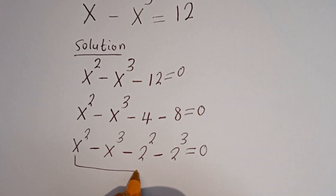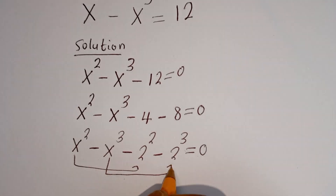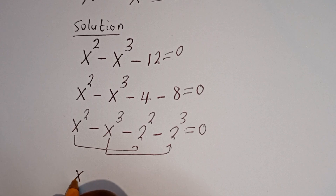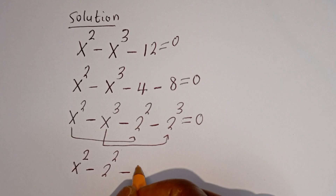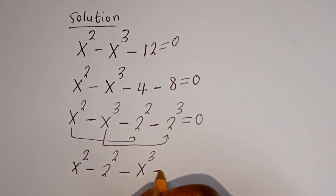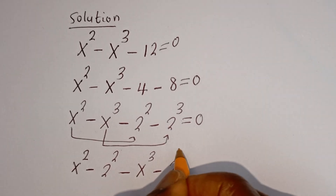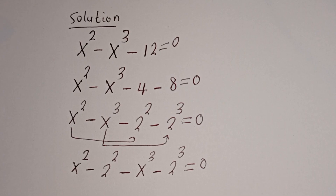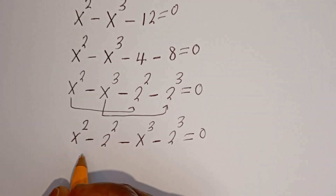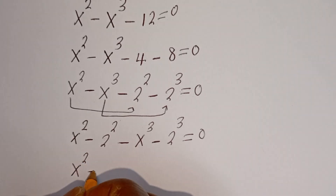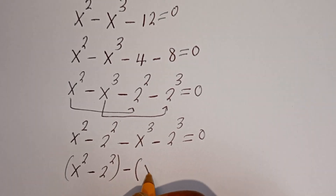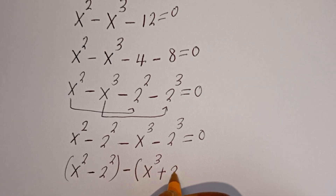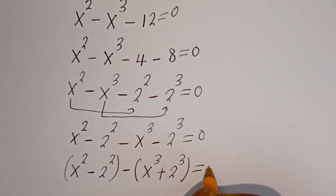Now let's compare this with this and pair this with this. Then we have S squared minus 2 squared, and here minus S to the power of 3, then minus 2 to the power of 3, is equal to 0. This can be written as: bracket S squared minus 2 squared, then minus bracket S to the power of 3 plus 2 to the power of 3, is equal to 0.